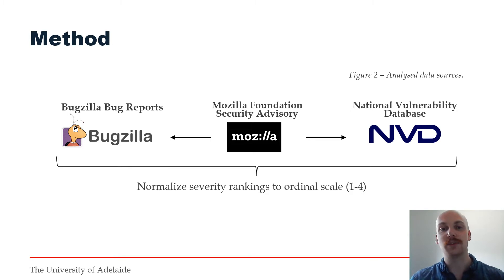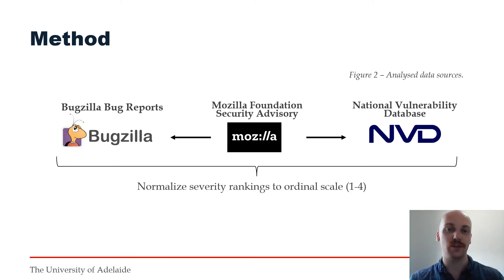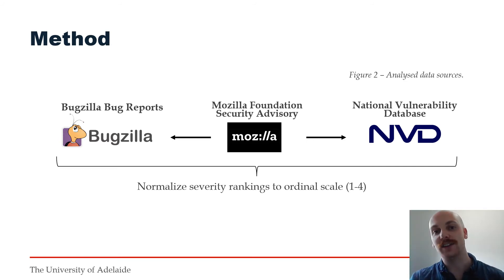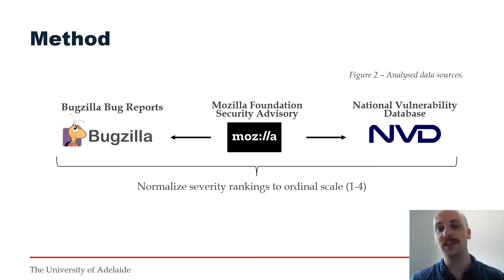Severity rankings are assigned most commonly by bug reporters in Bugzilla, and NVD relies upon special NVD analysts for assessment. By connecting each entry across each of these three sources, we can observe whether the severity ranking changes for a particular vulnerability across this lifecycle. To ensure fair comparison, we normalised the categorical severity rankings of each data source to a consistent ordinal scale of 1 to 4, with 1 being critical, 2 high, 3 medium, and 4 low severity. In total, we collected 2,455 unique vulnerability reports from a 10-year time period.